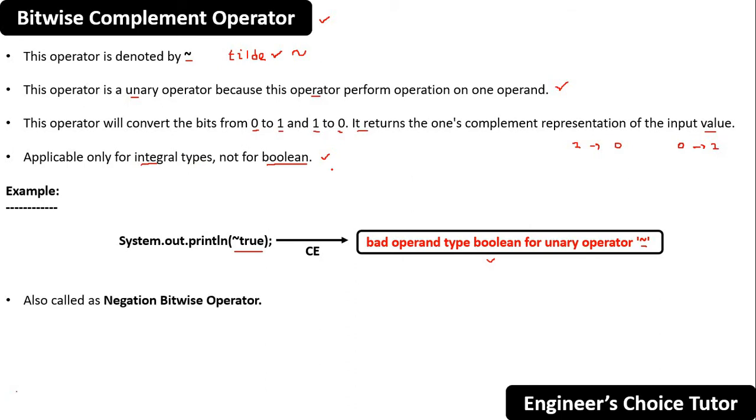This operator is also called the negation bitwise operator. This operator performs the operation bit by bit. Basically, it inverts the bit of its operand. If the bit is 1, it will invert to 0, and if it is 0, it will invert to 1. This is the only work of this bitwise complement operator. Now you want to see a proper example where we apply the bitwise complement operator on integral types.